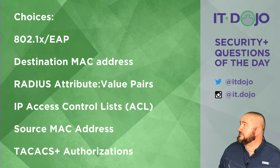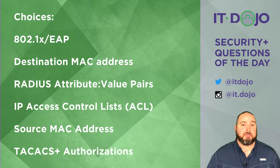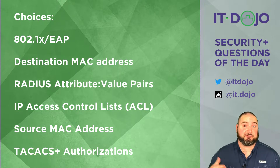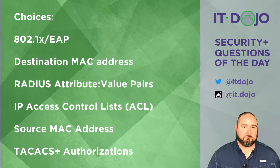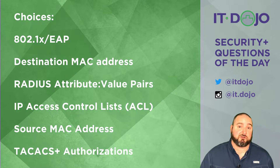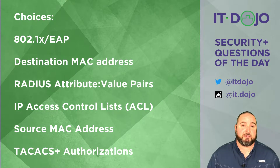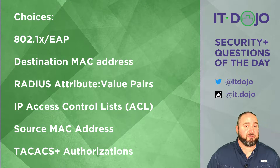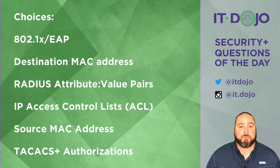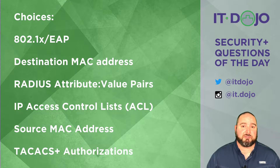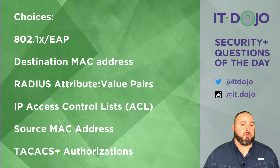Next choice: destination MAC address — that is not correct. We are looking for port security, which uses source MAC address, not destination. After that, RADIUS attribute value pairs (AVPs) are also not the right answer. AVPs are a great way for RADIUS to return specific attributes and their corresponding values, but that has nothing to do directly with port security being implemented on a switch.